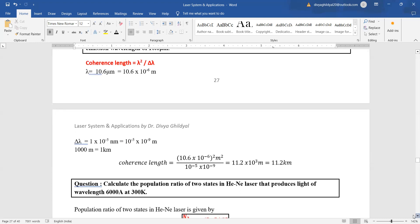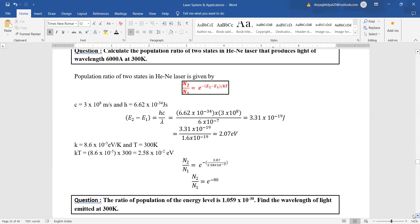Now this question: population ratio. This has been a very favorite question of laser. Calculate the population ratio of two states in helium-neon laser that produce light of wavelength 6000 angstrom at 300 Kelvin. Population ratio of two states is given by n2 upon n1 equal to e to the power minus e2 minus e1 upon kt. You put the value of c, h, given value of lambda, and you get the answer.